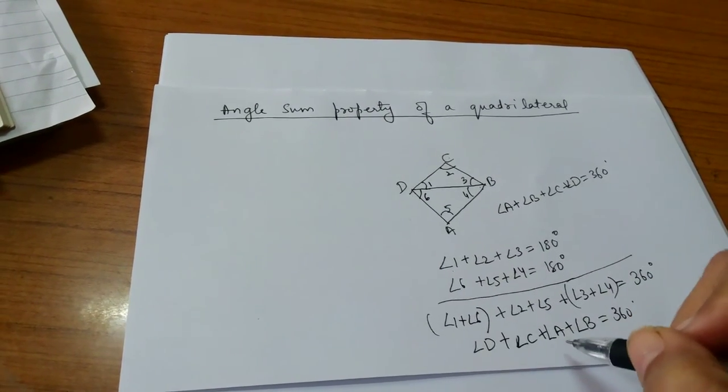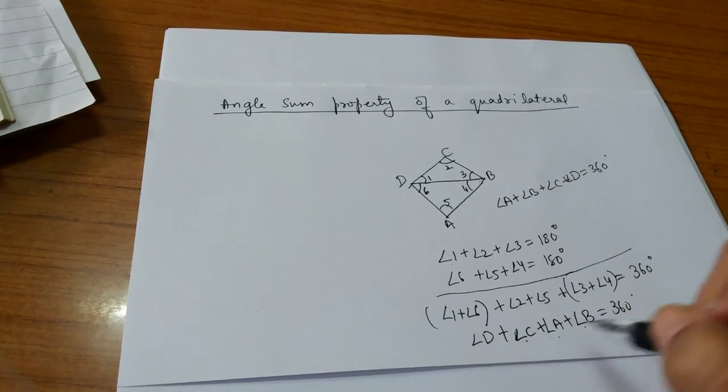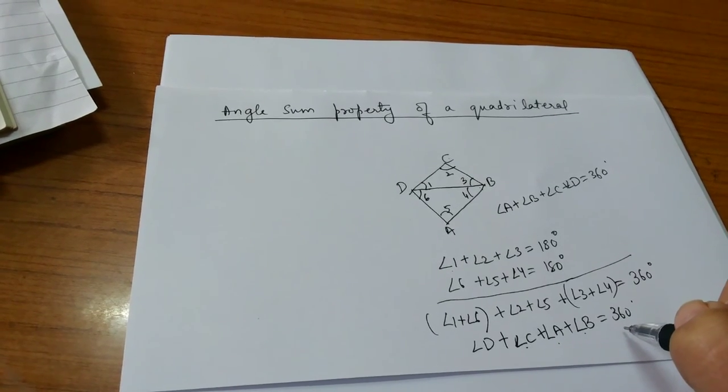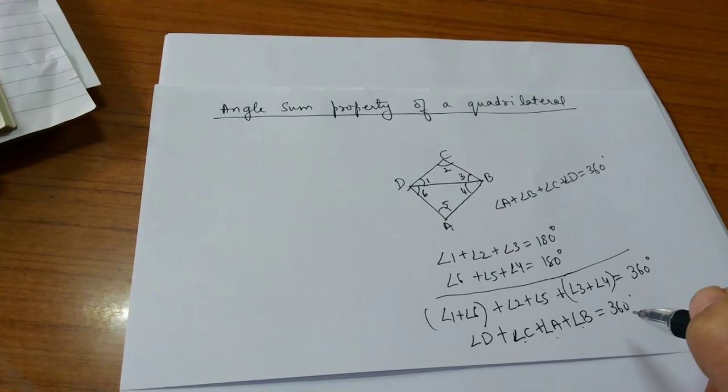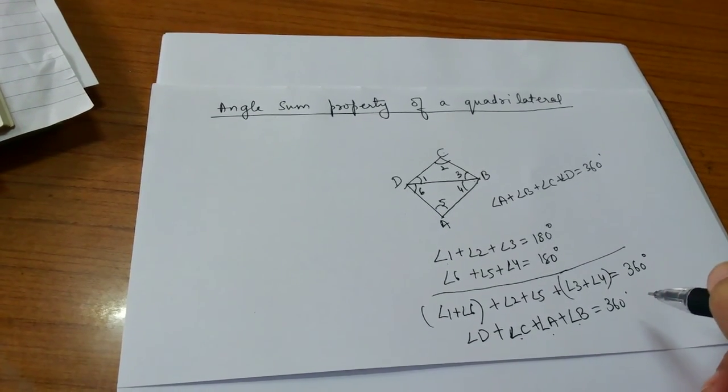Therefore, we get angle A plus angle B plus angle C plus angle D equal to 360 degrees. So the angle sum property of a quadrilateral says that the sum of interior angles of a quadrilateral is 360 degrees.